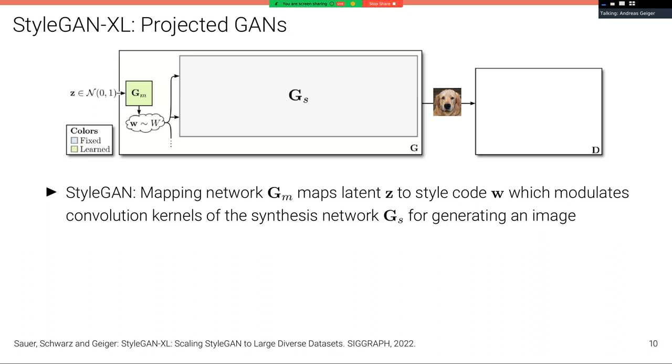So let's first look into how StyleGAN works. StyleGAN has a mapping network G_m that takes a latent as input and produces a style code w, which modulates the actual synthesis network G_s that produces an image. And then we have a discriminator, which is also a convolutional neural network that's trained jointly with the generator in order to determine if this image is coming from the real data distribution or is an artificially generated image. And we train this using the standard two-player game objective of GANs.